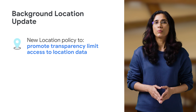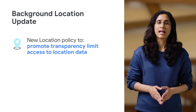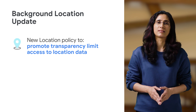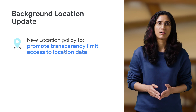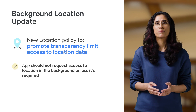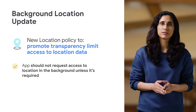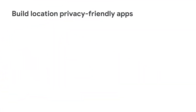In 2020, we announced our new location policy to promote transparency and limit access to location data, especially in the background. The essence of the new policy is that your app should not request access to location in the background unless it is really required. To build location privacy-friendly apps, I wanted to reinforce a few important principles by giving you a list of questions that you can ask yourself before implementing this feature on your app.